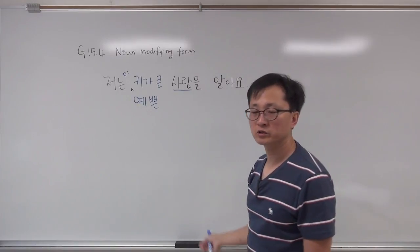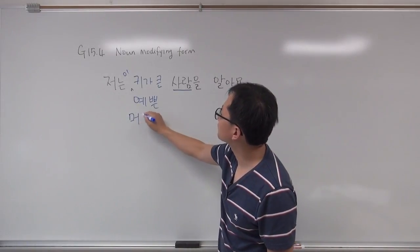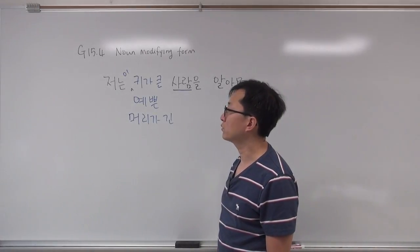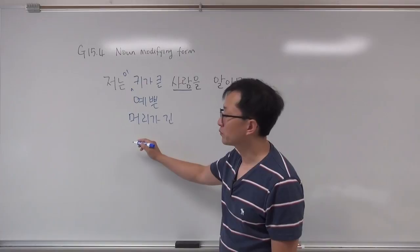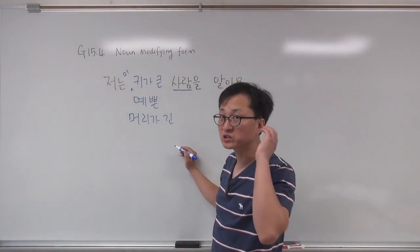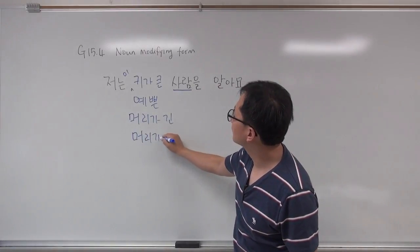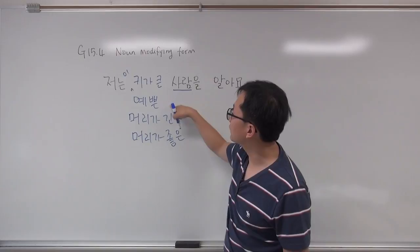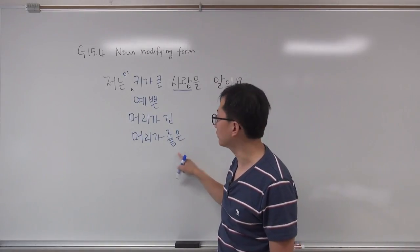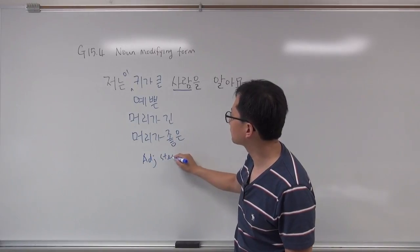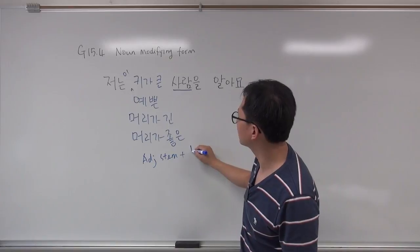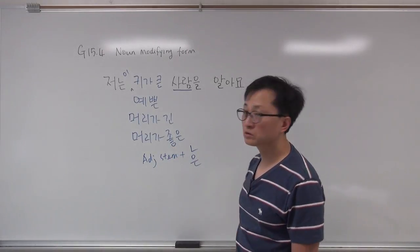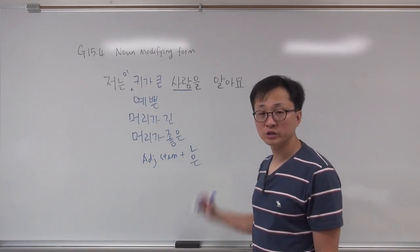So there is a long-haired person, and I know this smart person. So they are all adjectives: 크다, 예쁘다, 길다, 좋다. The form is adjective stem plus ㄴ. When there's no final consonant, you just add ㄴ. And when there is a final consonant, like 좋다, then you add 은. So this is the noun modifying form for adjectives, present tense.